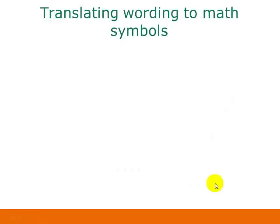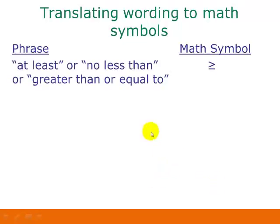When dealing with discrete probabilities — binomial probabilities being one specific type — it's very important how we translate the wording of problems into math symbols. Phrases like 'at least,' 'no less than,' or 'greater than or equal to' all translate into the ≥ symbol. The important thing is which values are included. Since we're talking about discrete probabilities, it makes a huge difference whether you include certain values, and the equal sign means the value is included.